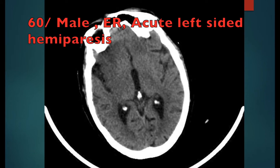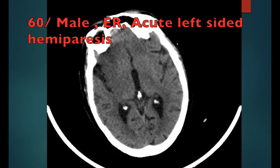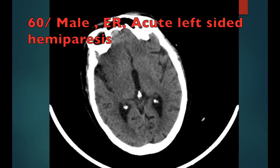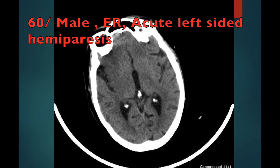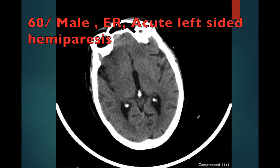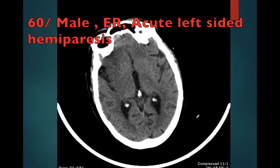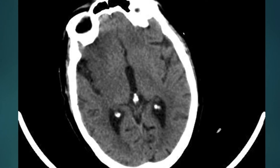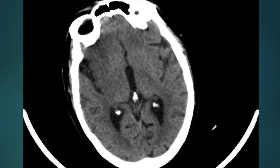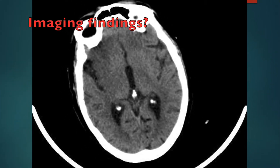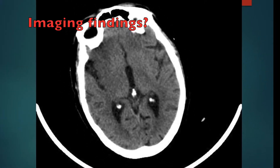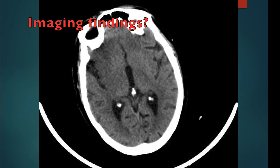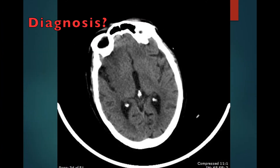A 60-year-old male patient presented to the emergency department with acute onset of left-sided hemiparesis. This is his CT scan. Look at this CT scan. What are the imaging findings in this case? What is the diagnosis? If you can't answer these questions, then this video is for you.